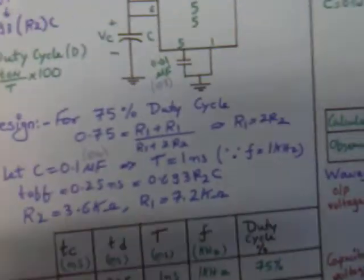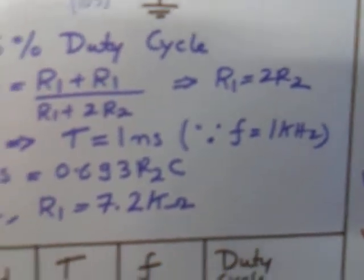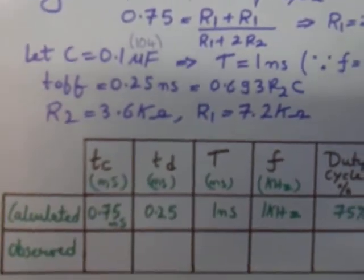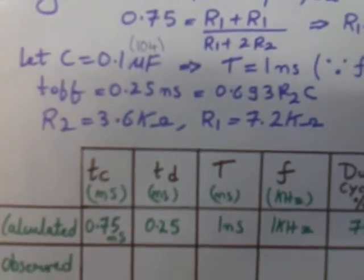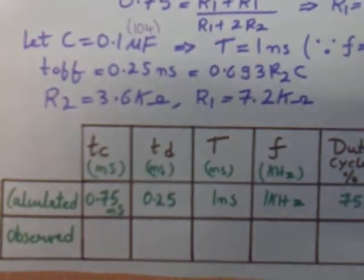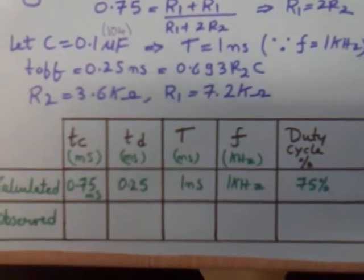For the design of 75% duty cycle, we get R1 as twice of R2. Considering the value of C and time period as 1 millisecond, we get the values of R2 and R1 as 3.6 and 7.2 kilo ohms respectively.